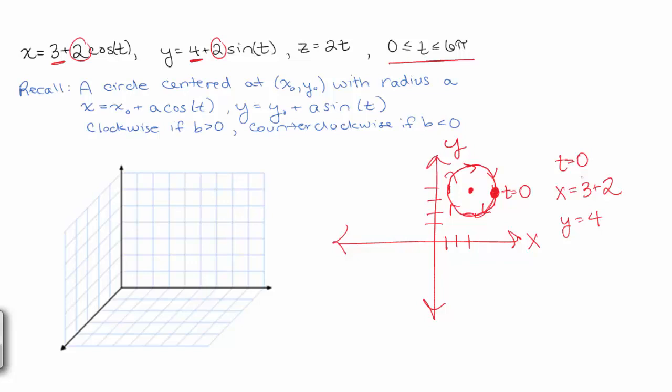And we're going around. We're going to get back to this point again when t equals 2 pi, and again when t equals 4 pi, and then when t equals 6 pi. So we're going to go around the circle once to 2 pi, the second time to 4 pi, the third time to 6 pi. So 3 times around clockwise.